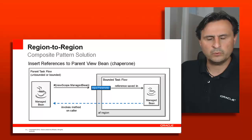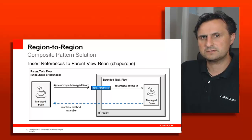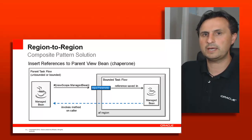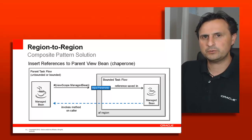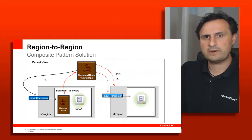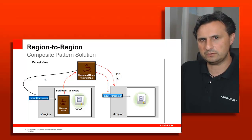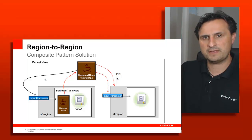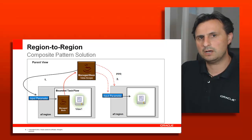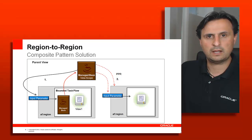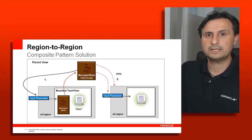Remember the last recording where I talked about the bean reference we inject into a task flow through an input parameter, which allows a task flow to call out to the parent view and execute a method on it. For a specific use case where we want region-to-region communication and both regions share the same parent, we can do what I call ping-pong: a reference bean is injected into one region, the region calls out to the parent view, and the parent view then adds an input parameter to another region and issues a partial page refresh.